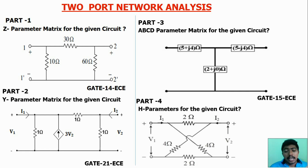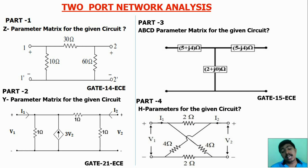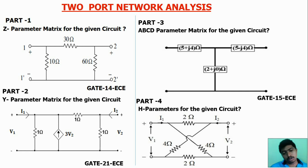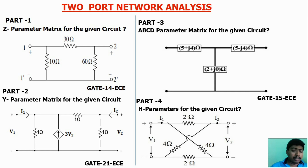In the part four video, we discussed how to find the H-parameters — hybrid parameters — for given electrical circuits. In total, four parameter types are covered: Z-parameters, Y-parameters, ABCD parameters, and hybrid parameters, all discussed one by one.